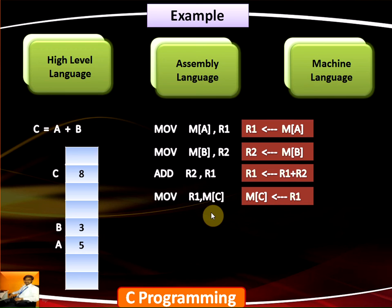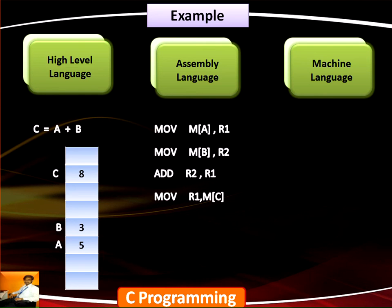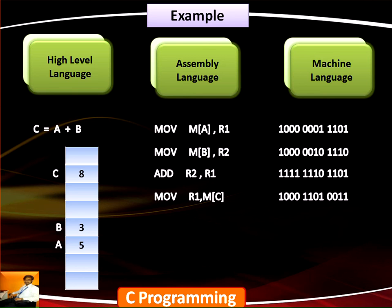This is further translated into machine language which is completely in zeros and ones. Every symbol in the assembly code has its respective binary value. Every line of assembly code is translated into zeros and ones. This is how high level, assembly, and machine languages are present with computer languages.